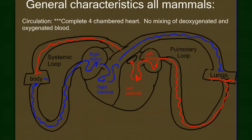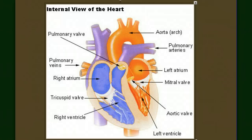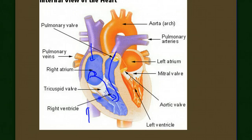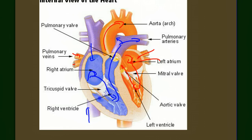Now let's look at the circulatory system. With birds we already had a four-chambered heart, and mammals also have one. The right atrium receives deoxygenated blood from the body and pumps it to the right ventricle, which sends it through the pulmonary arteries to the lungs. Oxygen-rich blood returns from the lungs into the left atrium, then to the left ventricle, which pumps blood out to the systemic loop — out to the body.